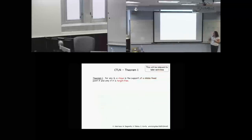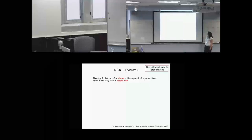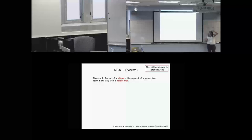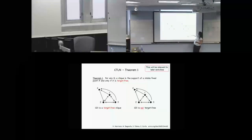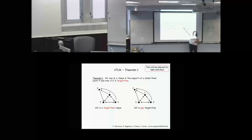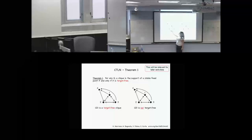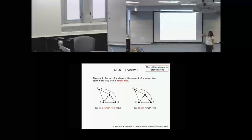This is beautiful in the CTLN condition because it translates nicely into graph features. The theorem we proved — now in a preprint on arXiv — is that given a graph, a clique — an all-to-all connected subgraph — is the support of a stable fixed point if and only if it is target-free. Target-free is a notion we defined: here's a clique on neurons one, two, three, and all of them synapse onto neuron four, so neuron four is a target for this clique and it is not target-free. Over here, they have outgoing synapses but not all synapse onto neuron four — so there is no target, and it's a target-free clique.